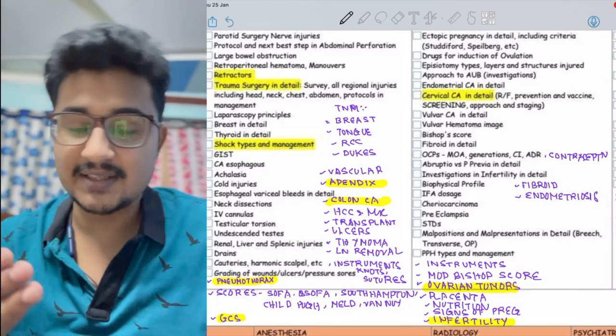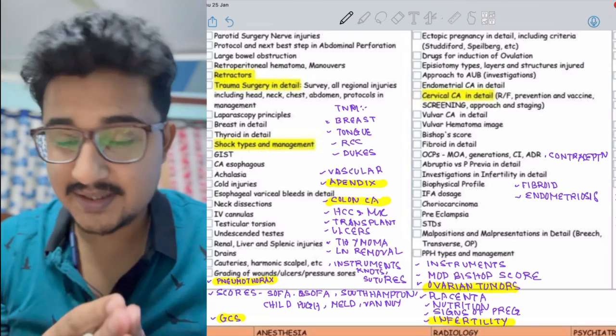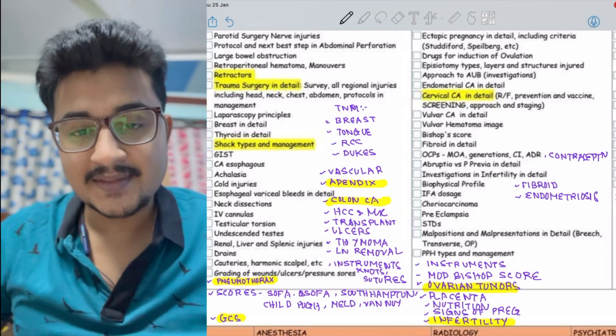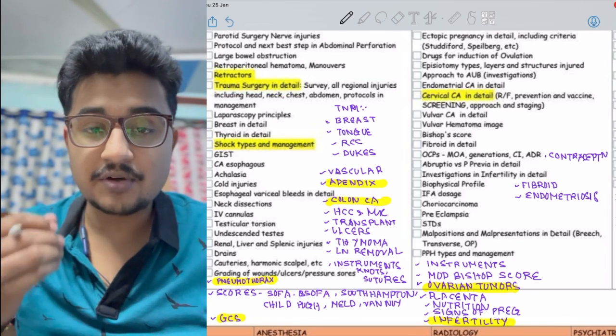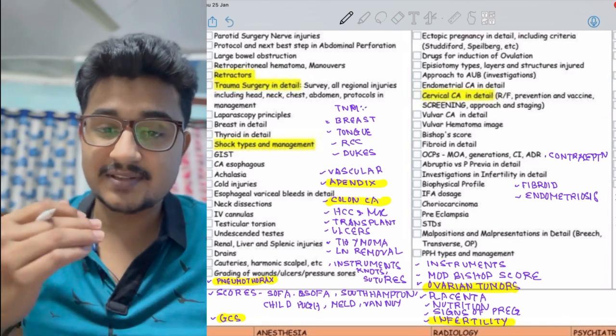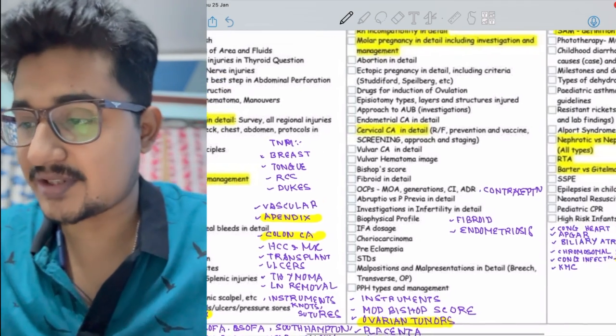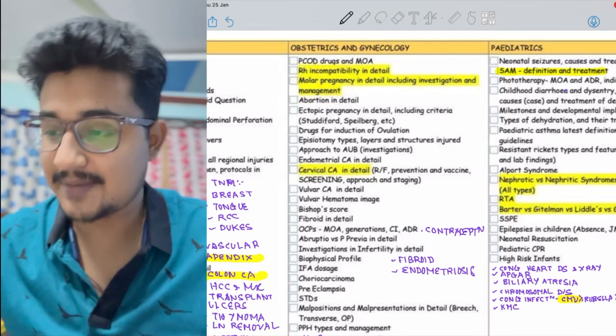In ObGyn you can go through the topics I've mentioned. Ovarian tumors are very important, infertility is important, and contraception is also important because India is a growing population and there's a demand for contraception - 60 percent of the population should have access to contraception.